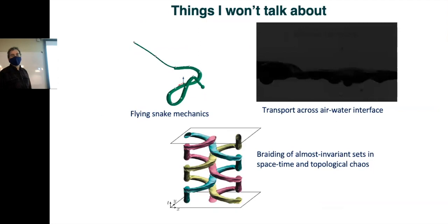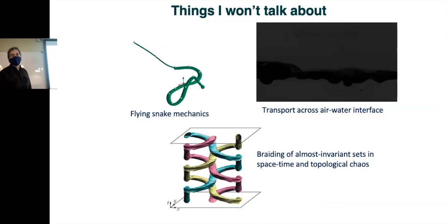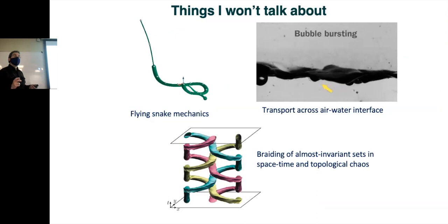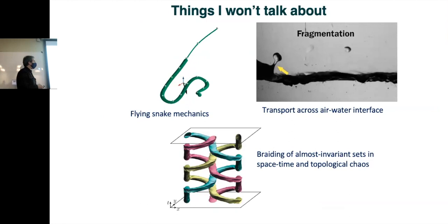First, I wanted to talk about things I won't be talking about that you might care about. I did some things with flying snake mechanics, then looking at transport across the air-water interface, and also some other mathematically related things about how you can get mixing in laminar flows, creating stirring. We analyze those by looking at braids in space-time of fixed points in a fluid. And I'm not going to be talking about any of that.